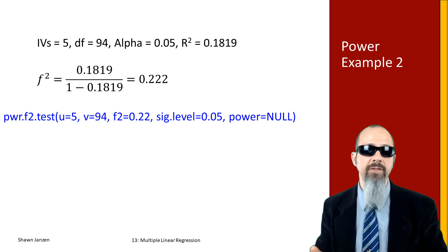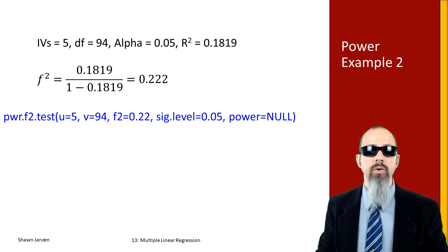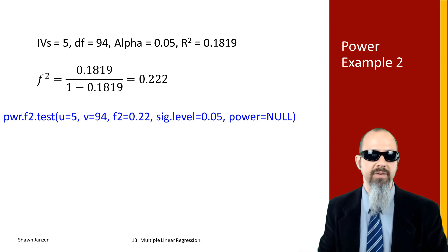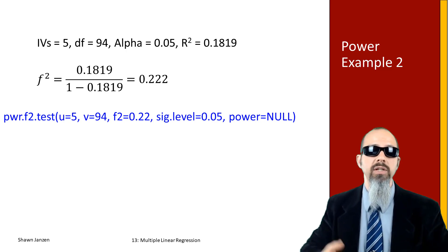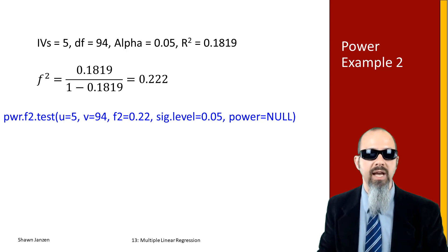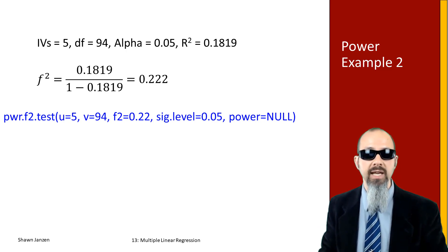Taking those things into account and using an alpha of 0.05 because I don't have a huge sample size, I'm going to take that r² of 0.1819, plug that into the f² formula, and it comes up with an f² of 0.22 repeating, which is just over a moderately sized effect size. Let's plug that into pwr.f2.test.